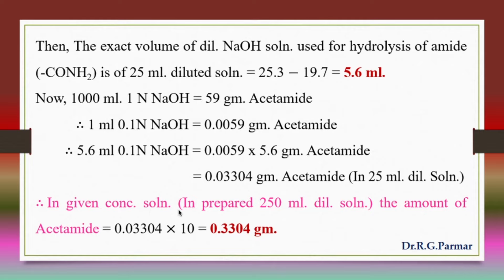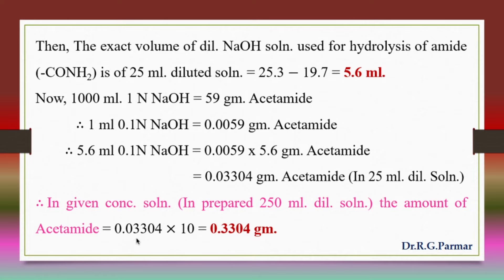In the given concentrated solution: from the 250 ml dilute solution after hydrolysis, we took 25 ml for titration and got a burette reading of 19.7 ml, meaning 5.6 ml NaOH was used for hydrolysis of that 25 ml dilute solution. So the amount of acetamide in the given concentrated solution (which was diluted to 250 ml) = 0.03304 × 10 = 0.3304 g.